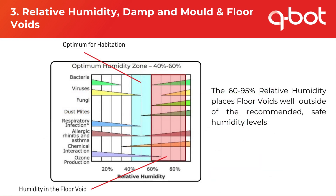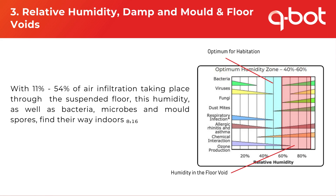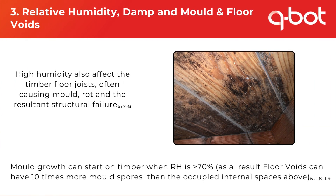With 11–54% of air infiltration taking place through the suspended floor, this humidity as well as bacteria, microbes and mould spores find their way indoors. The high humidity isn't just a problem when it infiltrates into the living space — it can also affect the timber floor joists themselves, causing mould and rot which can result in structural failure.